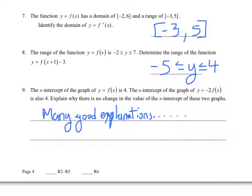Question seven. This one is very straightforward. The function y equals f of x has this domain, and this range identify the domain of the inverse. Well, for the inverse function, the range is the domain, and the domain is the range of the original function. So the x becomes the y, and the y becomes the x. So if the range of f of x is negative 3, 5, then the domain of y equals f inverse of x would be that same thing.